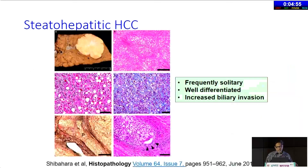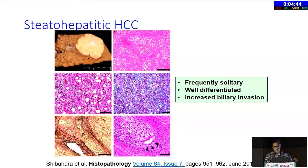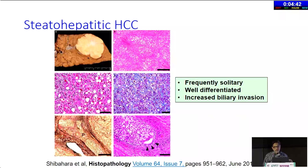The hepatocellular carcinoma that occurs in these patients has a specific form — also referred to as steatohepatitic hepatocellular carcinoma — which is frequently solitary and well-differentiated, but has increased biliary invasion.